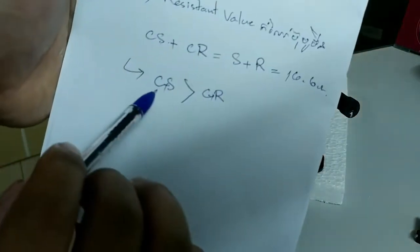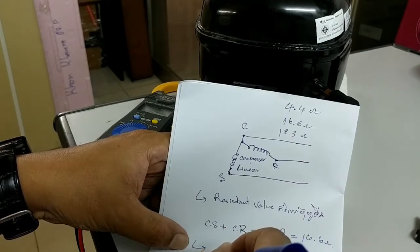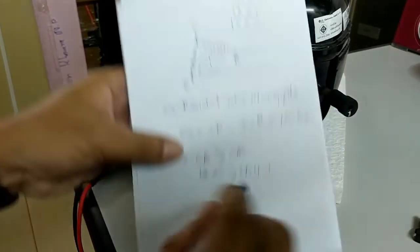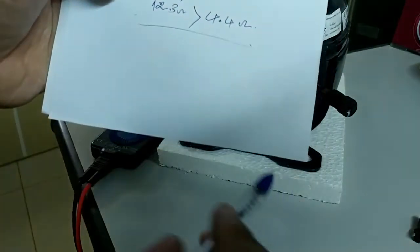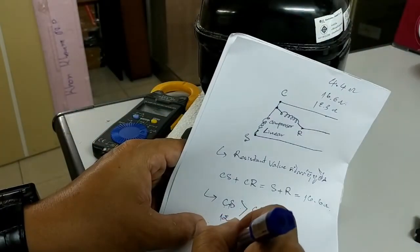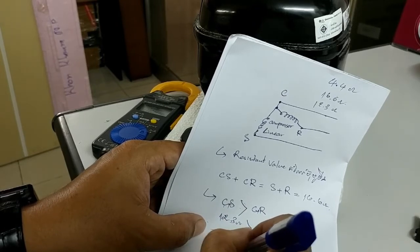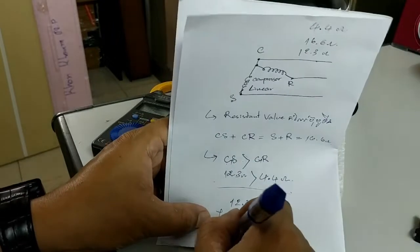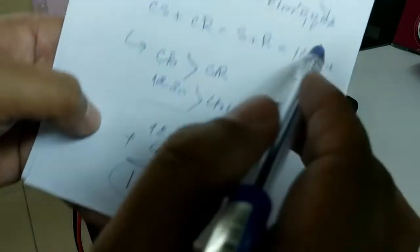12.3 is C plus S like this. So you know the probe resistance, you can measure again. 12.4 ohm, 4.4, you can plus like this: 7 point... 16 ohm. So the same, yeah, 16.6, 16.7 is the same, like this.